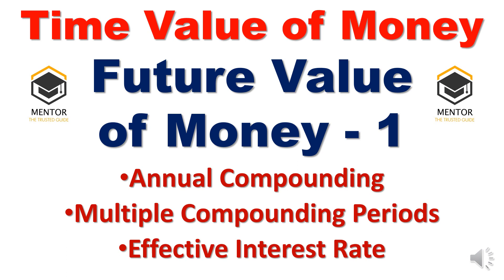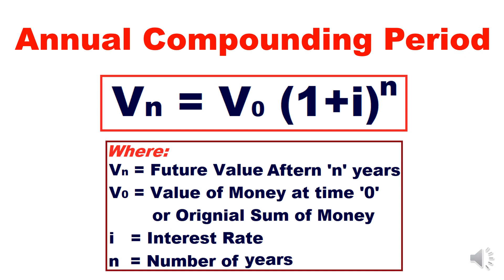Let's start. The first concept is the annual compounding period concept. The formula for calculation of annual compounding is: Vn = V0 × (1 + i)^n, where Vn is the future value after n number of years, V0 is the value of money at time 0 (the original sum deposited), i is the interest rate, and n is the number of years.